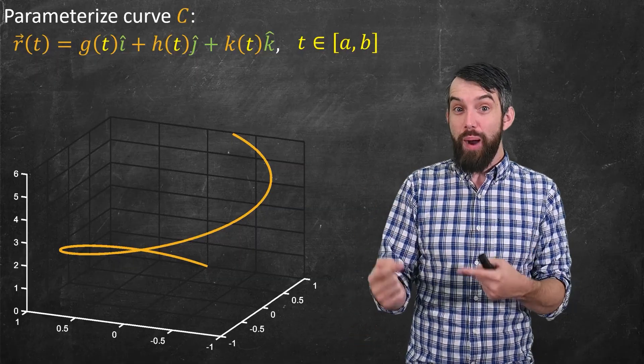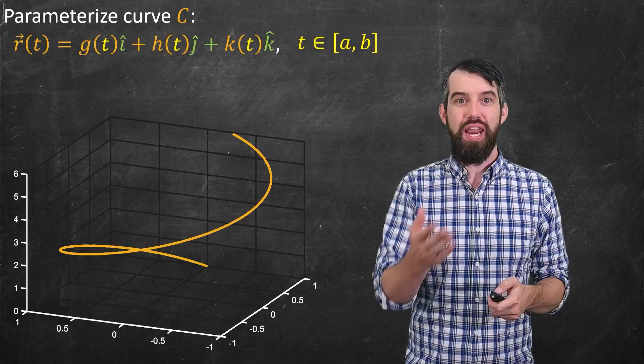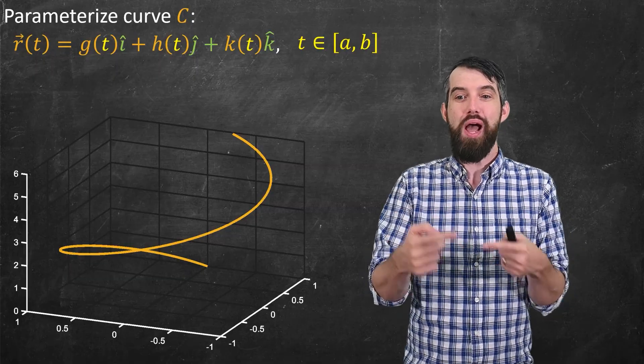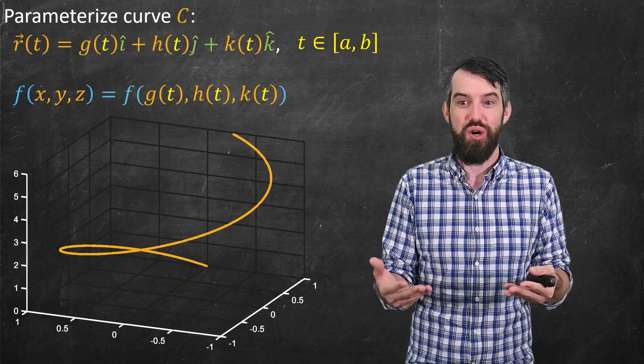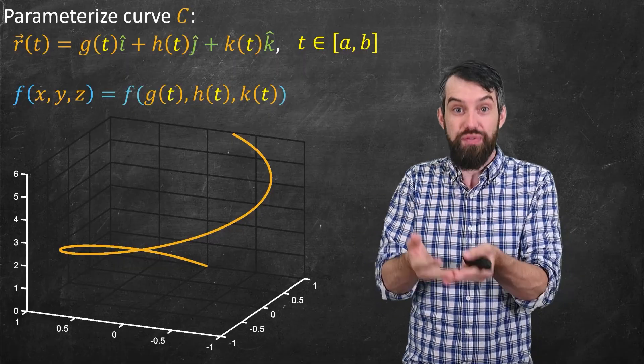Now, above this curve, I want to imagine that I have some function, some function of x, y, and z, where if x, y, and z are described to be above this curve, I can put them f(g(t), h(t), k(t)).